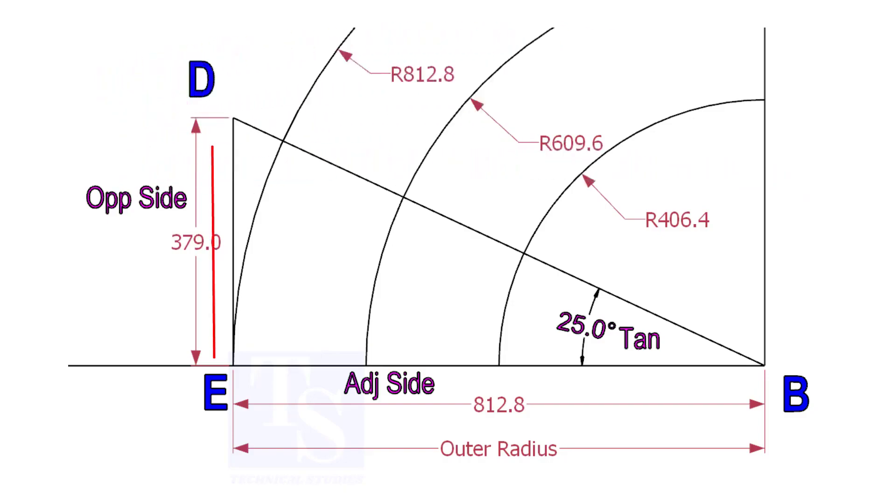Draw the line ED vertically and the slant line DB. I hope now you will be able to draw a line in any degree.